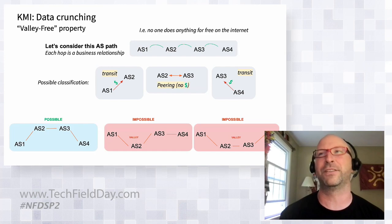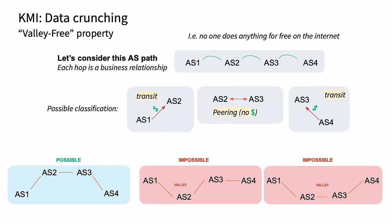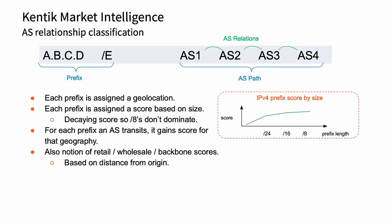I mentioned the Valley-Free thing. The idea is that nobody's doing anything for free on the internet — if it's a business, you're either exchanging traffic or getting traffic for money. In a hypothetical AS path of AS 1-2-3-4, as you're ascending on the edges, there's often a peering link somewhere in the middle. You cannot have valleys in that where AS2 in the middle is essentially paying AS1 and AS3 to help them exchange their traffic — that's a losing proposition. There's nothing in BGP that prevents it, but a network engineer does not want this to happen.